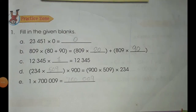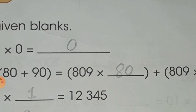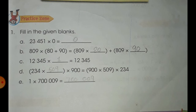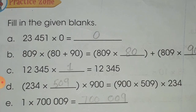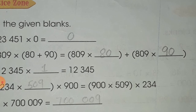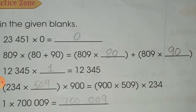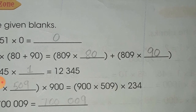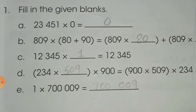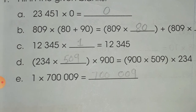Now we will practice the properties in the practice zone. The question is to fill in the given blanks. In part A, a number is multiplied by 0, so the product will be 0. In part B, 3 numbers are given: 809 is multiplying with a bracket containing an addition sign. On the left-hand side, 809 multiplies with 80 first, then there is an addition sign, then 809 multiplies with 90.